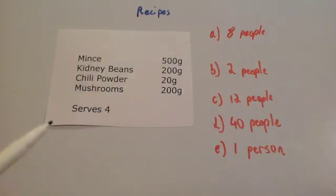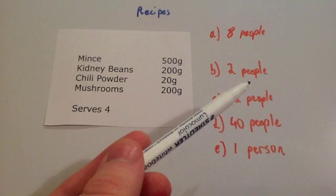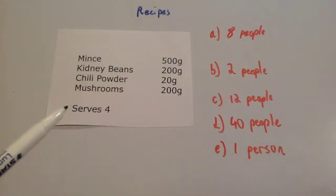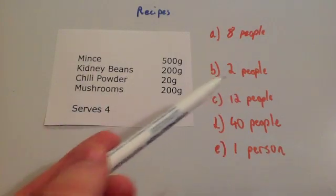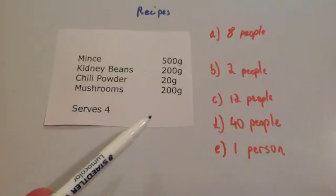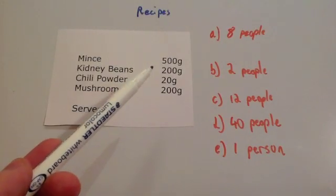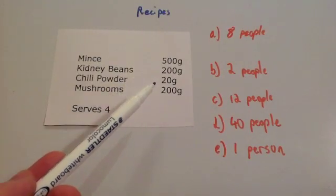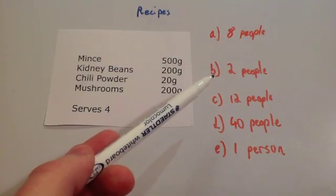So that's quite straightforward. If it was two people you were cooking for — because this serves four people, two people is half of that — you're just going to halve all of these ingredients. So it would be 250, 100, 10, and 100 for two people.